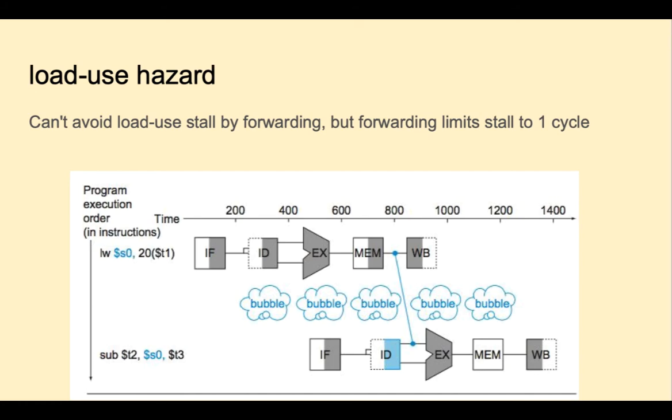The load use hazard is a special kind of data hazard. Again, we have a destination register in the load word that is one of the source registers in the sub instruction. Instead of waiting for S0 to be written back to the register file, we can go ahead and grab it as soon as it's retrieved from data memory and forward it. Notice that even with forwarding, we're still going to have one pipeline stall.